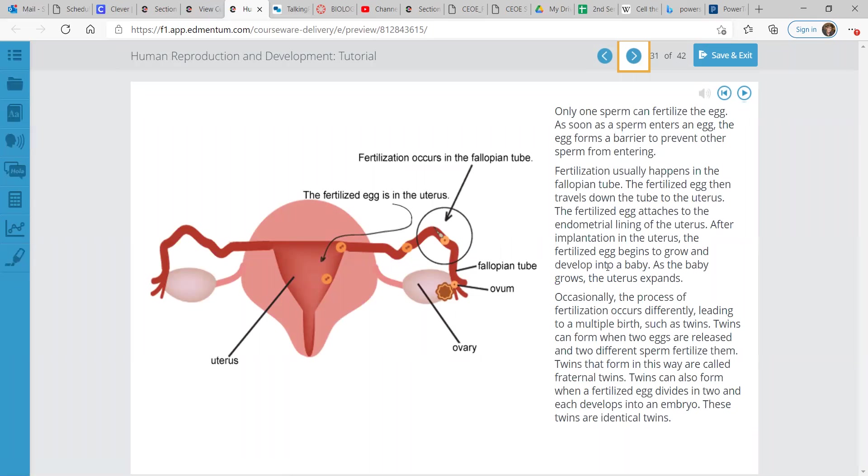Only one sperm can fertilize the egg. As soon as a sperm enters an egg, the egg forms a barrier to prevent other sperm from entering. Fertilization usually happens in the fallopian tube. The fertilized egg then travels down the tube to the uterus. The fertilized egg attaches to the endometrial lining of the uterus. After implantation in the uterus, the fertilized egg begins to grow and develop into a baby.